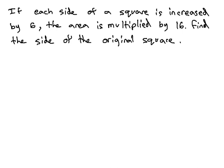Each side of a square has been increased by 6. When this happens, the area gets multiplied by 16. So we've got this small square and then this bigger square.